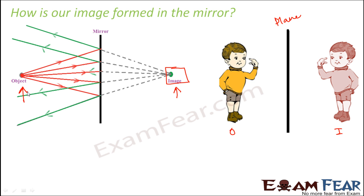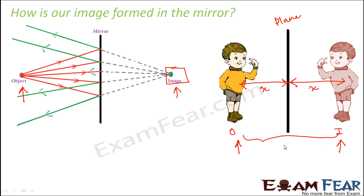Therefore, the image is formed at that point behind the mirror. The distance of the object from the mirror equals the distance of the image from the mirror. So if you are standing at distance x from the mirror, the image is also formed at distance x behind the mirror. The total distance between the object and the image is x plus x, that is 2x.